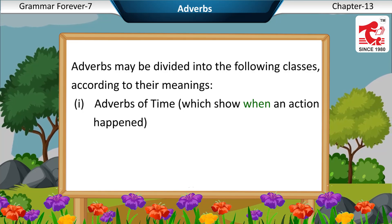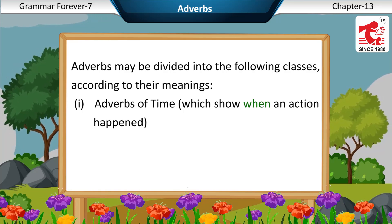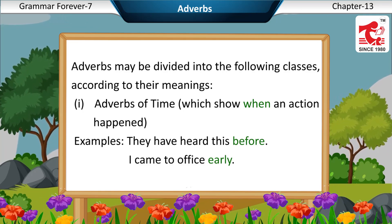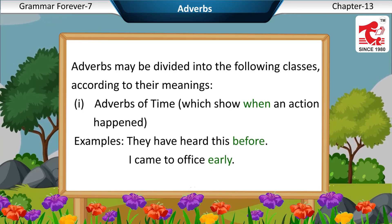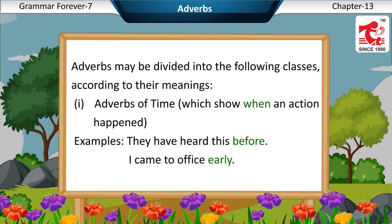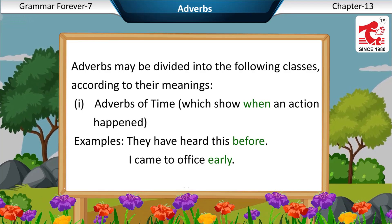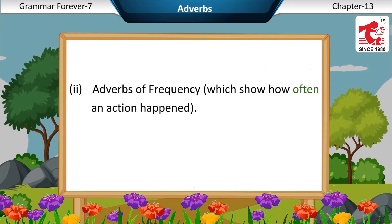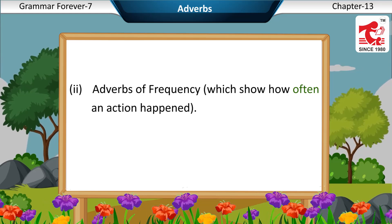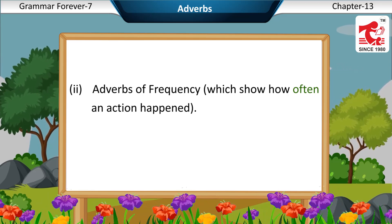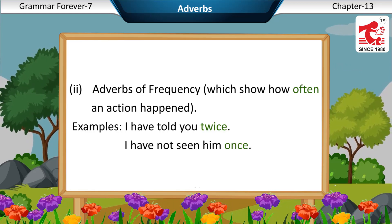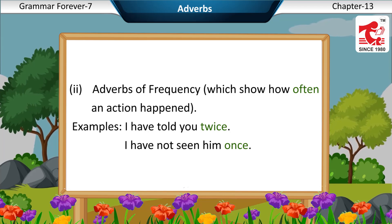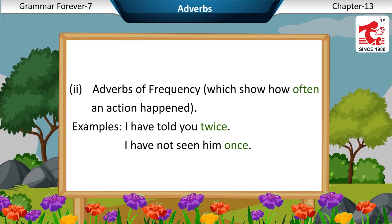1. Adverbs of time, which show when an action happened. Examples: They have heard this before. I came to office early. 2. Adverbs of frequency, which show how often an action happened. Examples: I have told you twice. I have not seen him once.